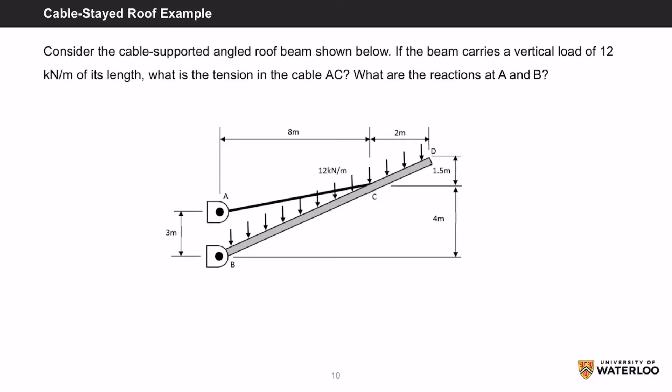Consider the cable-supported angled roof beam shown below. If the beam carries a vertical load of 12 kN per meter of its length, what is the tension in the cable AC? What are the reactions at A and B?